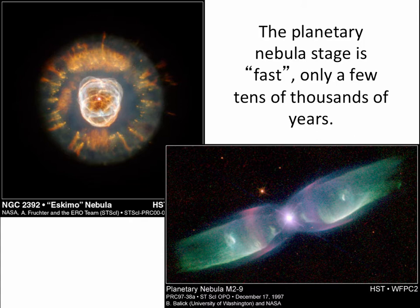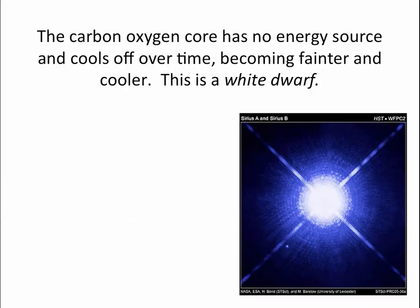However, that former nuclear reactor stays behind. This core of carbon and oxygen ash, it starts off really hot, but it has no energy source, can't do any fusion, so it's going to cool off over time as it loses energy. And as it cools off, it'll become fainter, and it'll become redder in color. But it starts off white hot, but it's really faint because it's so small. Remember, this is only the size of the Earth. So we call this a white dwarf.